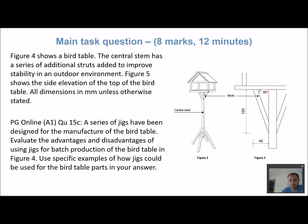This is a pretty typical question. Although it specifically mentions a bird table, it's clearly about the use of jigs as production aids. What you should learn from this video is how to approach these questions, because a lot of what you'd say would be the same regardless of the product being produced — a chair, a table, or anything else. This is an eight-marker and should take about 10 to 12 minutes.